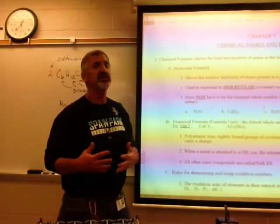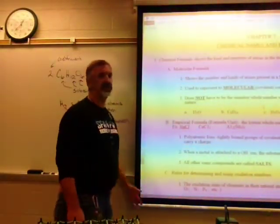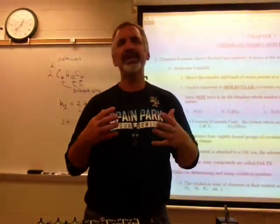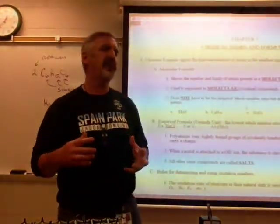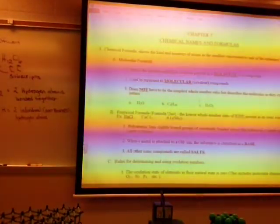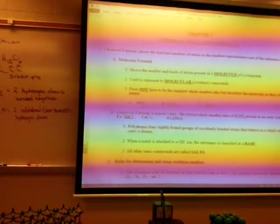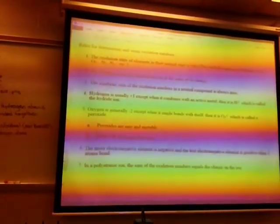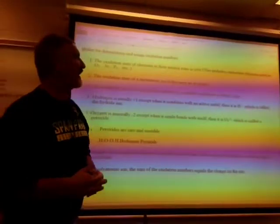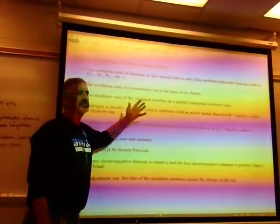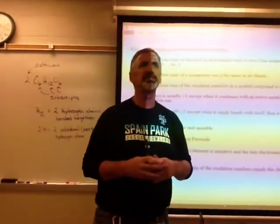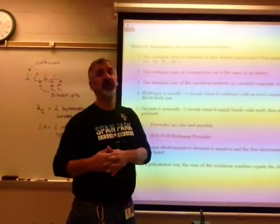Metals are elements, so we won't worry about the formula for metals. We're really going to focus on ionic and covalent compounds. But before we can get into naming and writing formulas, we have to understand oxidation numbers. The definition of an oxidation number is the number of electrons an atom tends to gain, lose, or share when forming a chemical bond.